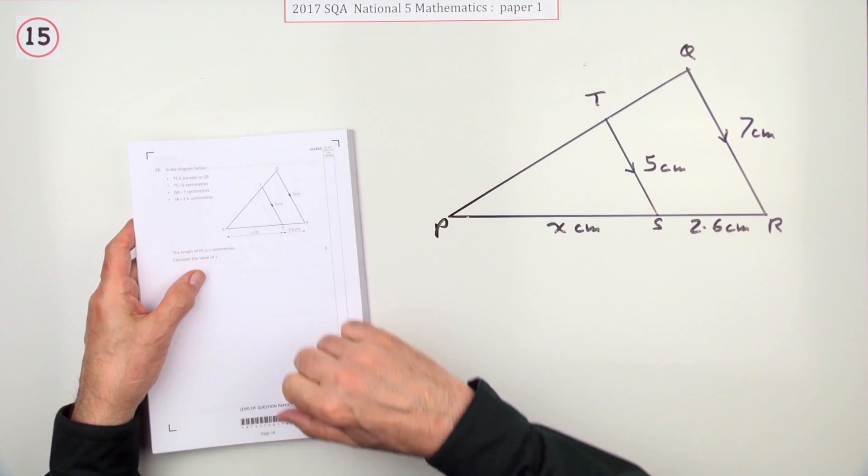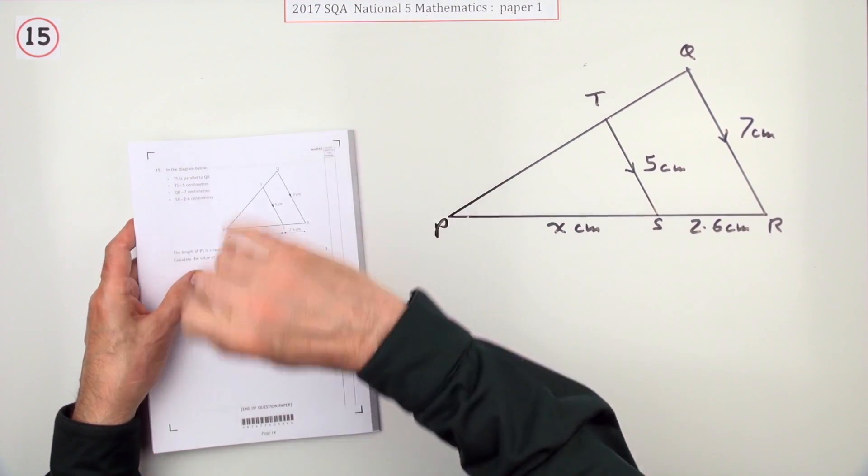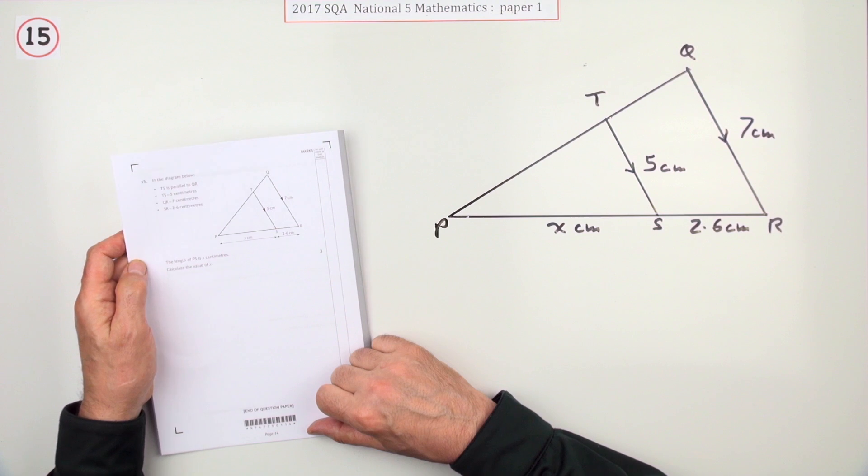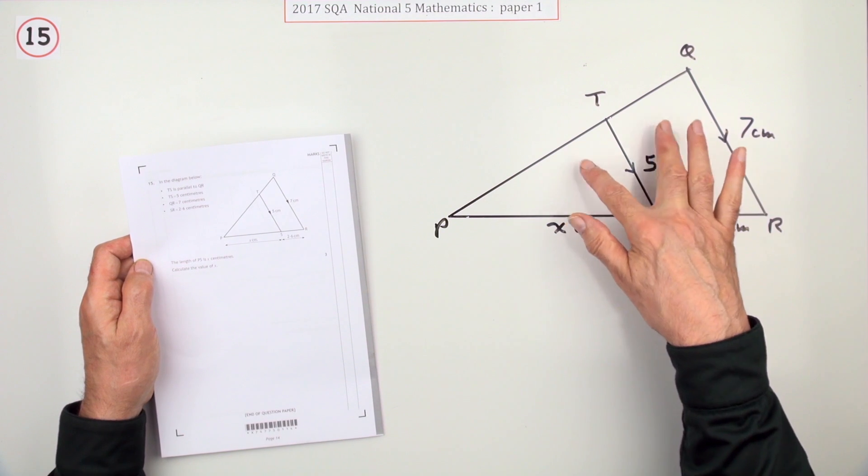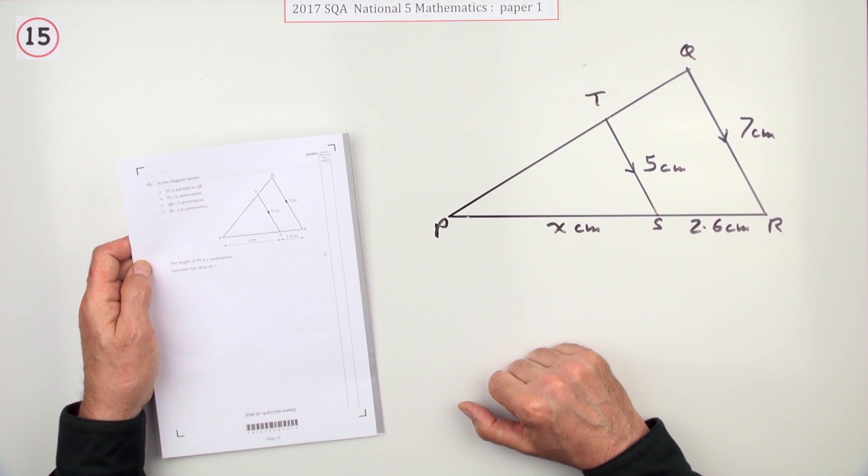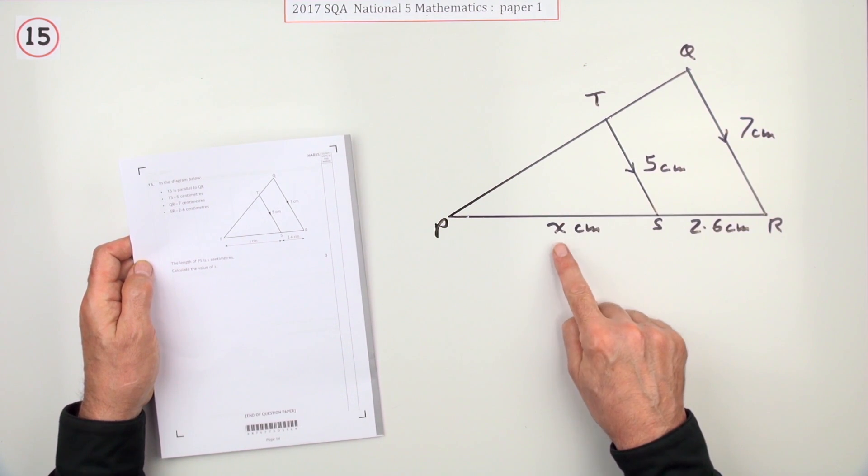Number 15 then from paper 1. The last question in paper 1 of the 2017 National 5 Mathematics Exam. Here we go. Similar triangles. The return of a proper similar triangles question. Calculate the value of x.